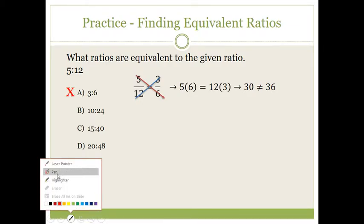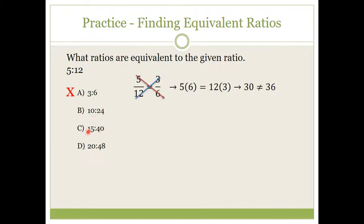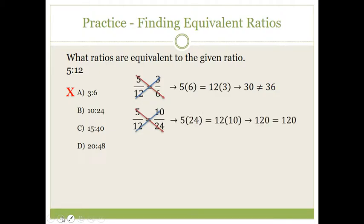Let's check the next ratio. Is five to twelve equivalent to ten to twenty-four? I set up five over twelve equal to ten over twenty-four and use the cross product property. Five times twenty-four is one hundred twenty, and twelve times ten is also one hundred twenty. So these two ratios are in fact equivalent.